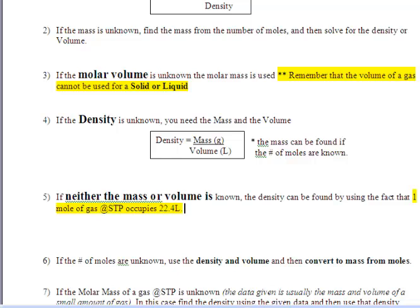Now if the density is unknown, we just need the mass and volume. Sometimes you might be given the number of atoms or molecules, but we're going to convert through moles from whatever those are to our mass. So we're going to use our conversion table.